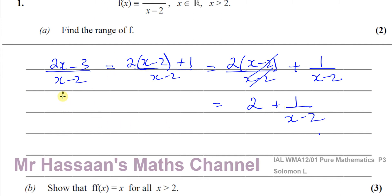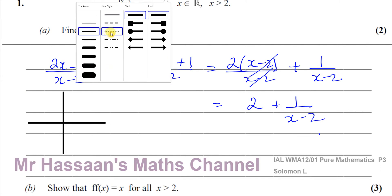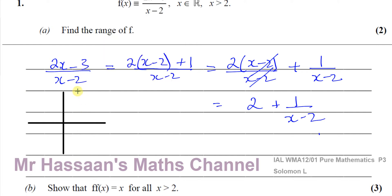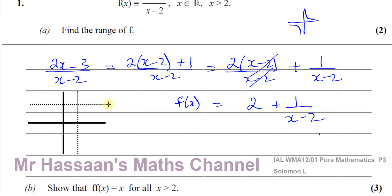Making a little sketch of this function: we're going to have an asymptote at x = 2, because when x equals 2 the function is undefined. The other asymptote is horizontal at y = 2. This is like a transformation of the graph y = 1/x — the horizontal asymptote has moved up two spaces, and the vertical asymptote has moved two spaces to the right. So x = 2 and y = 2 are the two asymptotes.